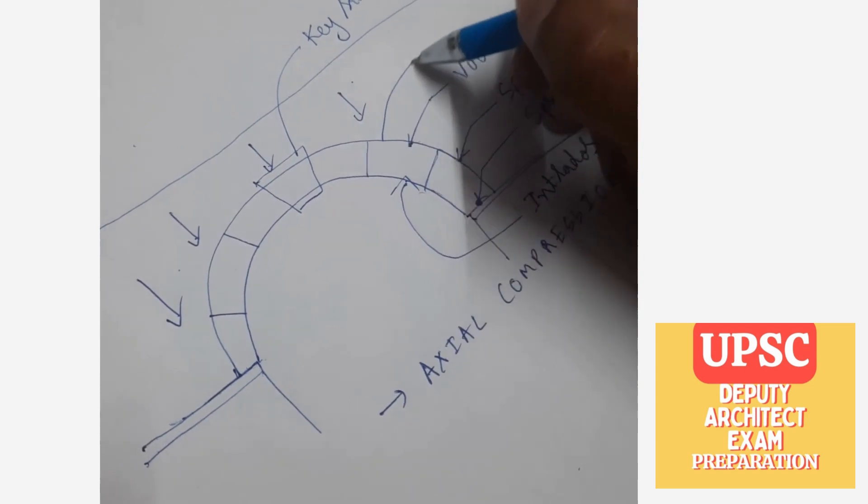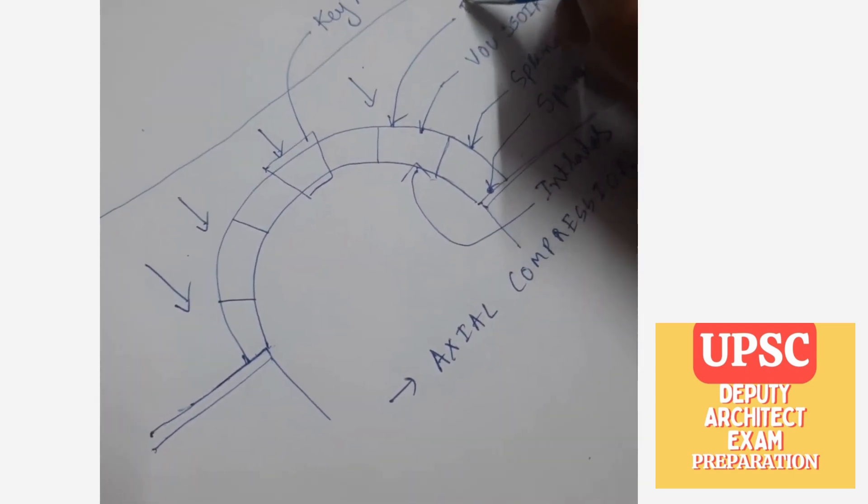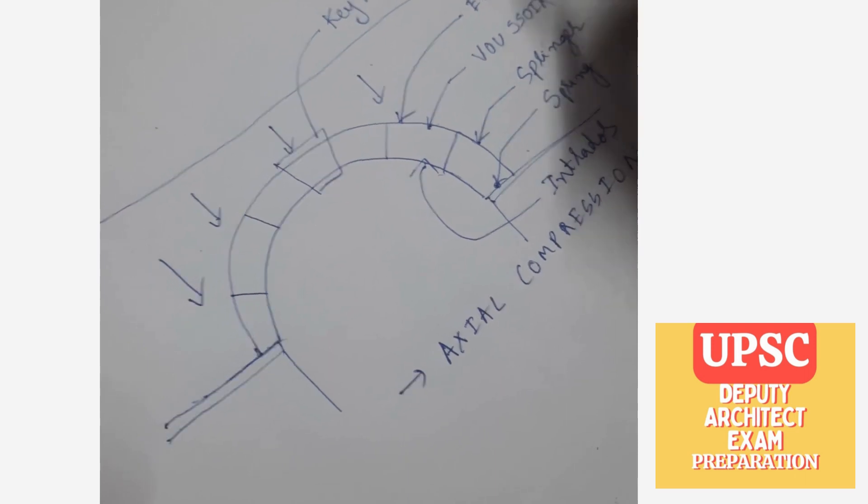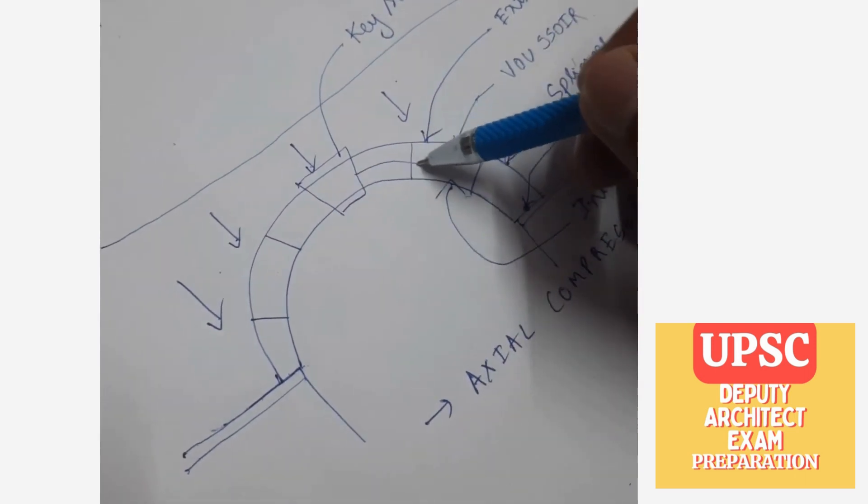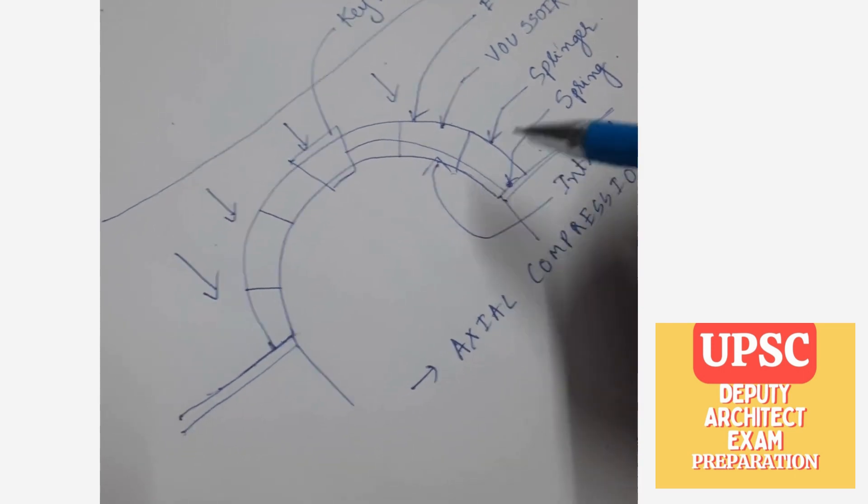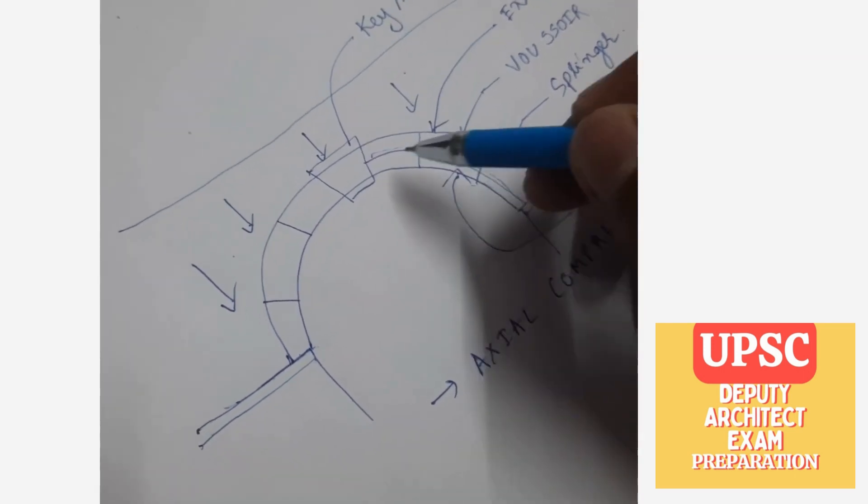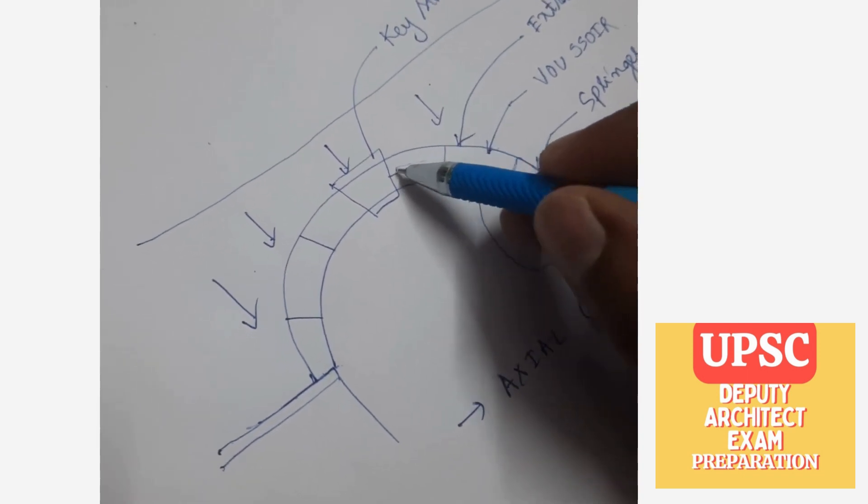Likewise, the exterior surface of an arch is called extrados. Suppose we have any embellishment and moldings, etc., on top of, like, decorative things on top of arch.